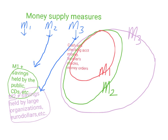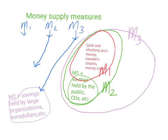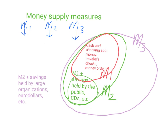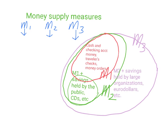So we have our cash and our money in checking accounts in M1. M2 has M1 plus the savings accounts held by the public, CDs, and so forth. And M3 includes everything in M2 plus savings held by large organizations, eurodollars, etc.